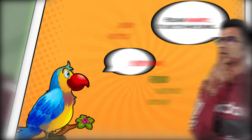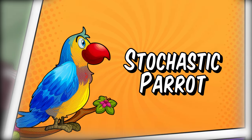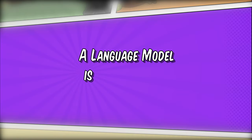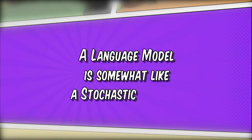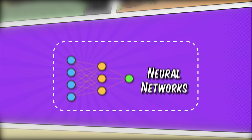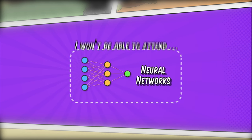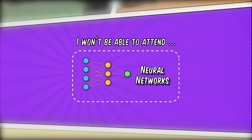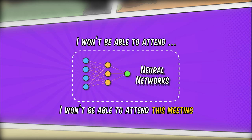We can call Buddy a stochastic parrot. Stochastic means a system that is characterized by randomness or probability. A language model is somewhat like a stochastic parrot — they are computer programs that use a technology called neural networks to predict the next set of words for a sentence.